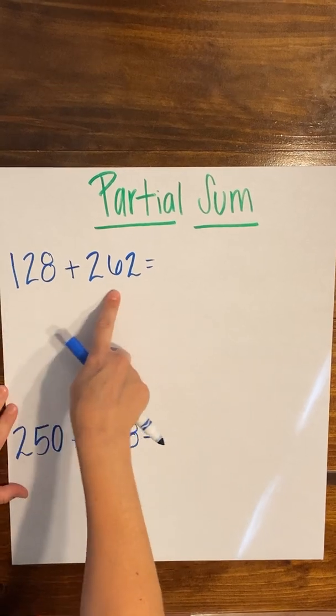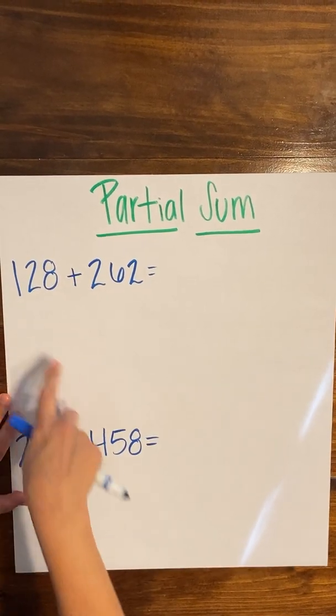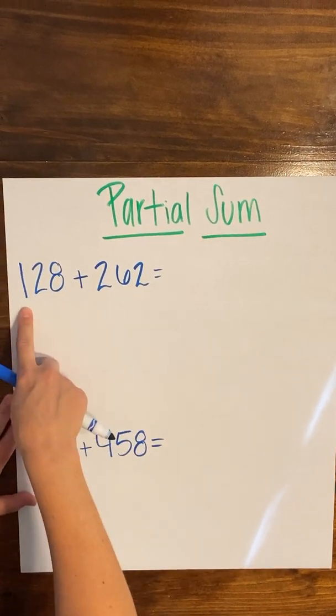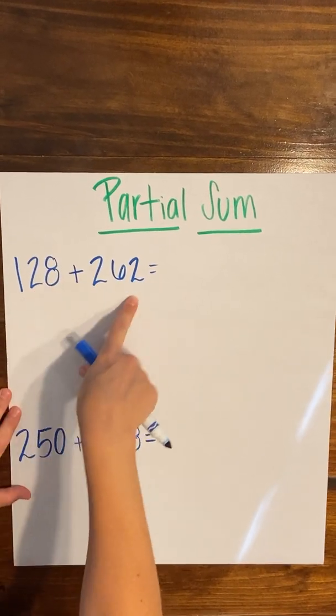So let's take 128 plus 262. When I'm looking at this, I can kind of see right off the top of my head that eight and two are going to give me a 10.